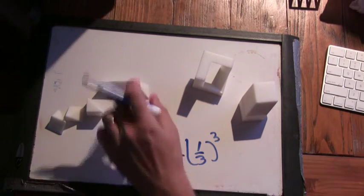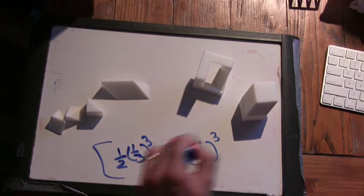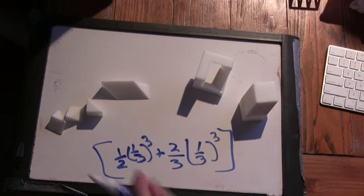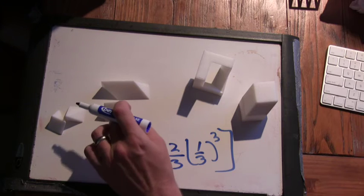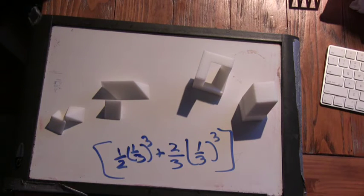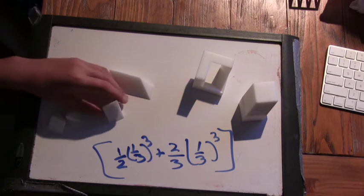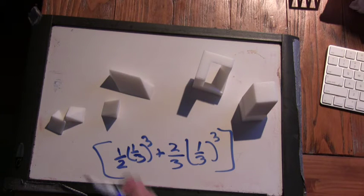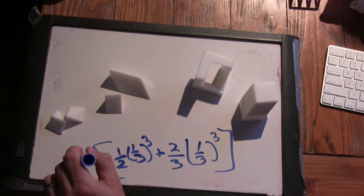So it turns out we can write the volume of this shape as a half times one-third cubed plus two-thirds times one-third cubed. And we know that this isn't one-third cubed. How come? The volume? Because if you had two of them, then it would be a cube. If you had two of them, it would make a cube. Yeah. And we just have to multiply this by six.